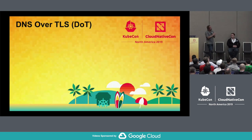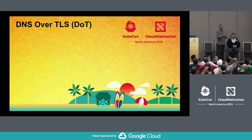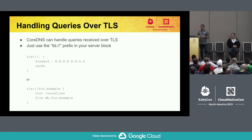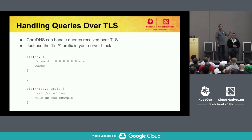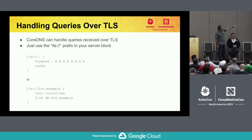The other thing I wanted to talk about briefly is DNS over TLS. DOT has been supported by CoreDNS for some time — it can handle queries received over TLS. It's very easy: within your server block, rather than just a domain name, you use something that looks like a URI — tls://dot — and then whatever the scope is. In this example, we're forwarding all queries over to Google Public DNS at 8.8.8.8 and 8.8.4.4 and caching responses.